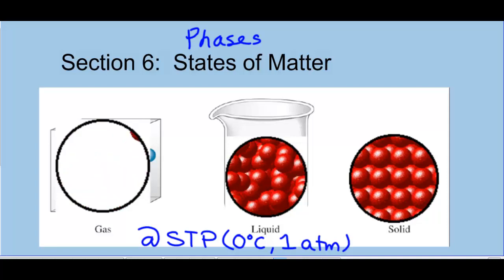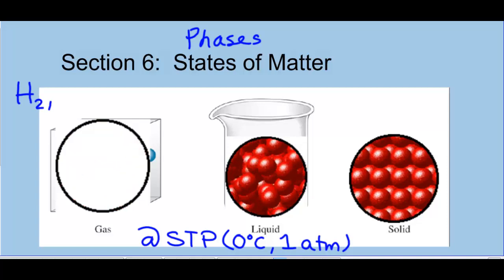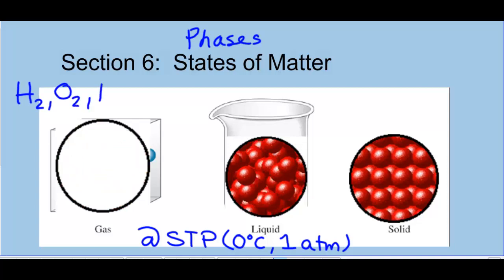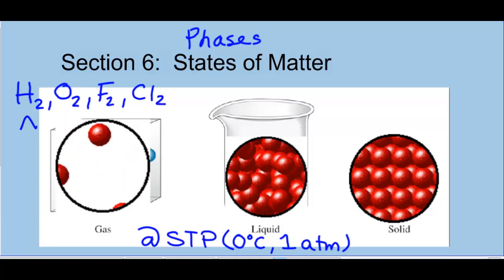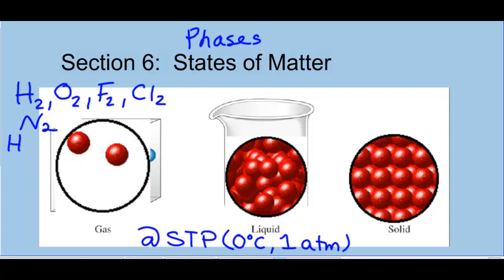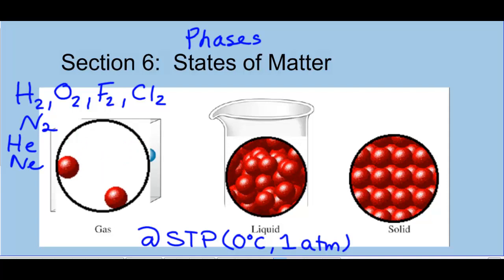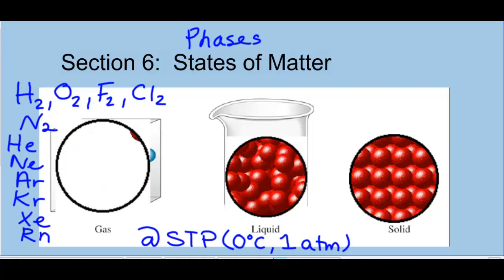So the gases are hydrogen, and don't worry why I'm putting this little two there right now. Oxygen, fluorine, chlorine, nitrogen. And then all of the very last column, which is called group 18 on the periodic table. So all the very last column, which is helium, neon, argon, krypton, xenon, and radon. All of those elements exist as gases at STP.